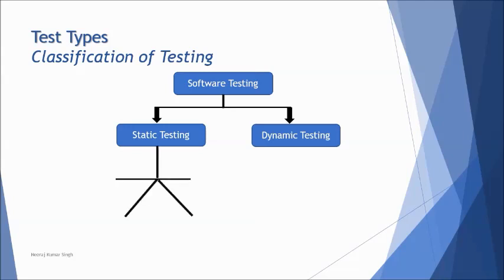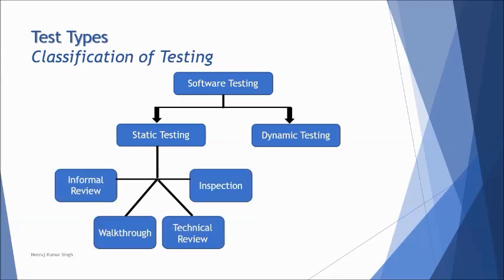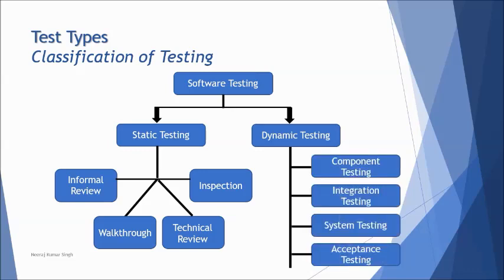For static testing, there are four types of reviews: informal, walkthrough, technical, and inspection — each with its own unique characteristics. We'll cover them in more detail in chapter 3. For dynamic testing, we conduct testing through levels: component testing, integration, system, and acceptance.